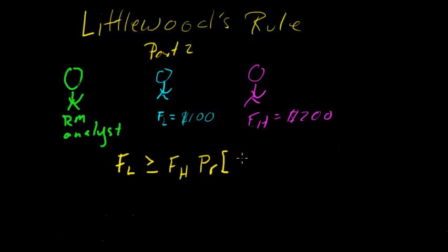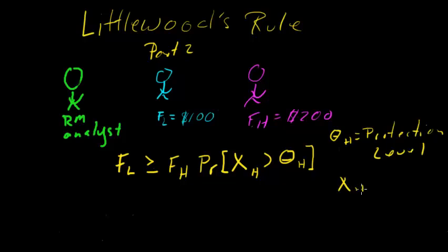And some probability statement here. In this case, X is the demand for fare class H, or the higher fare, greater than theta, where theta is the protection level for that fare class. So theta_H is the protection level. X is the demand for H.